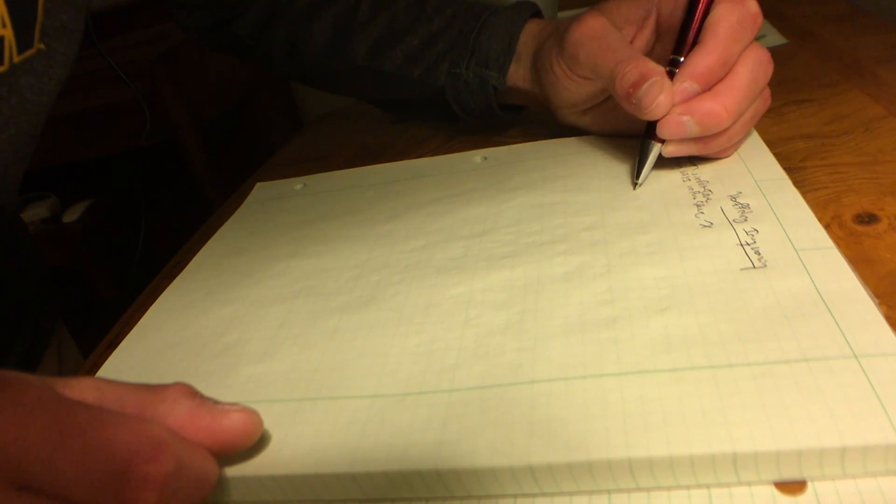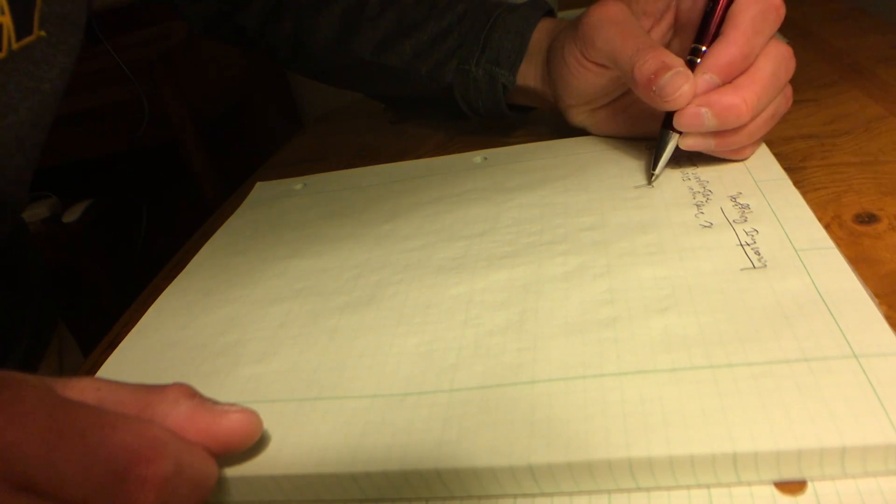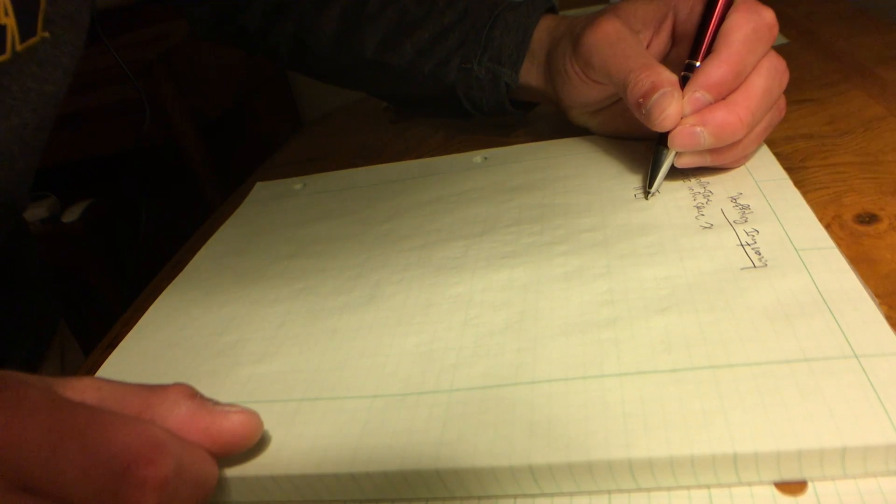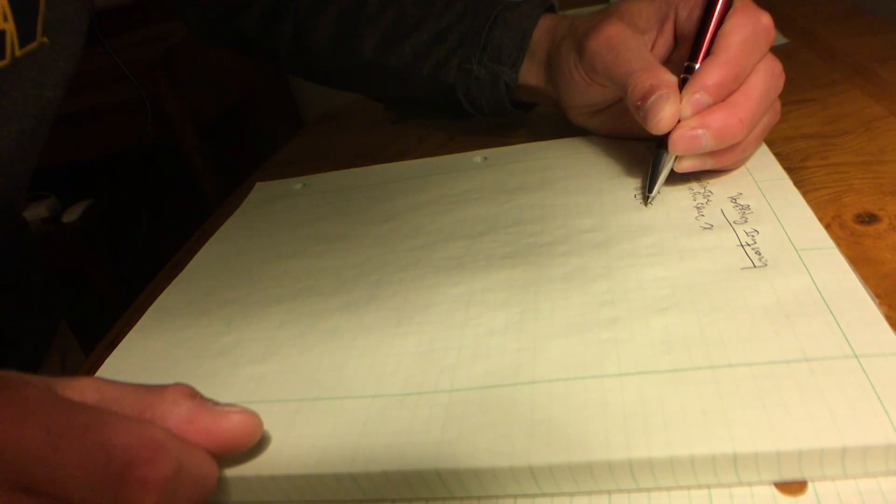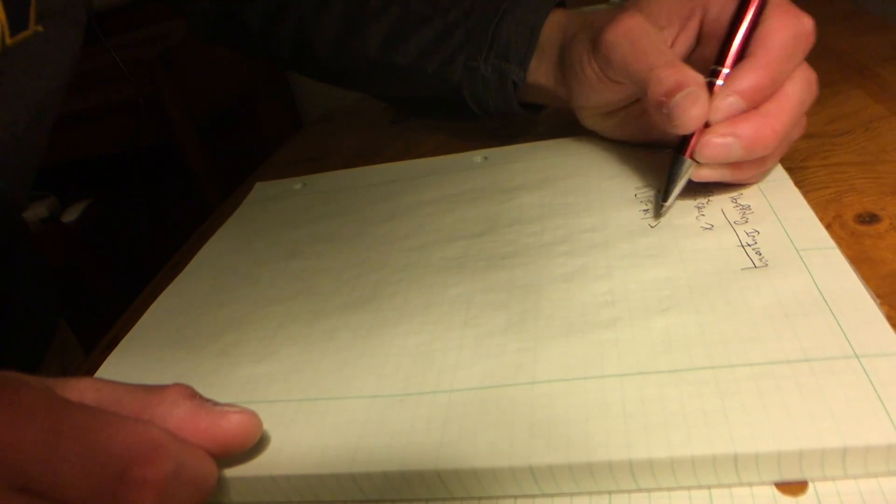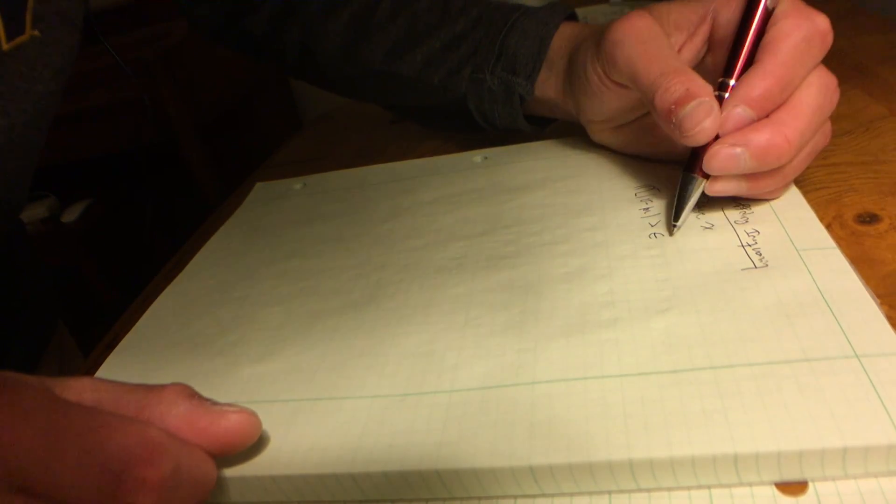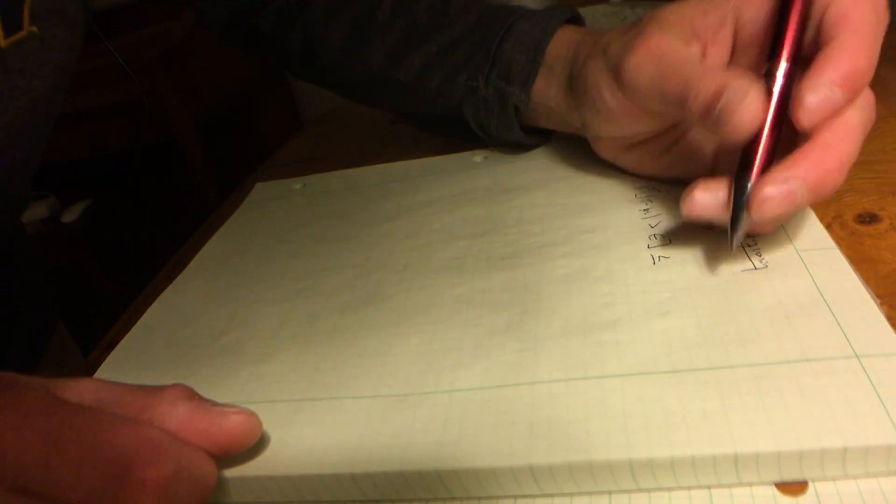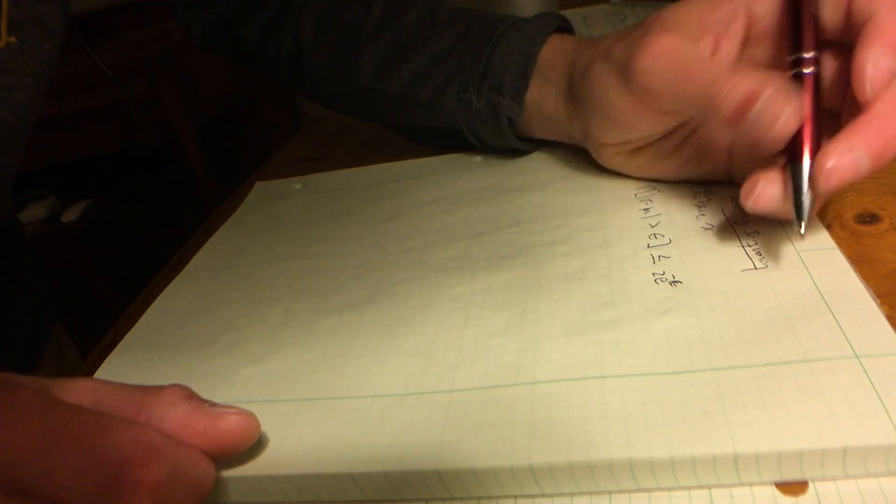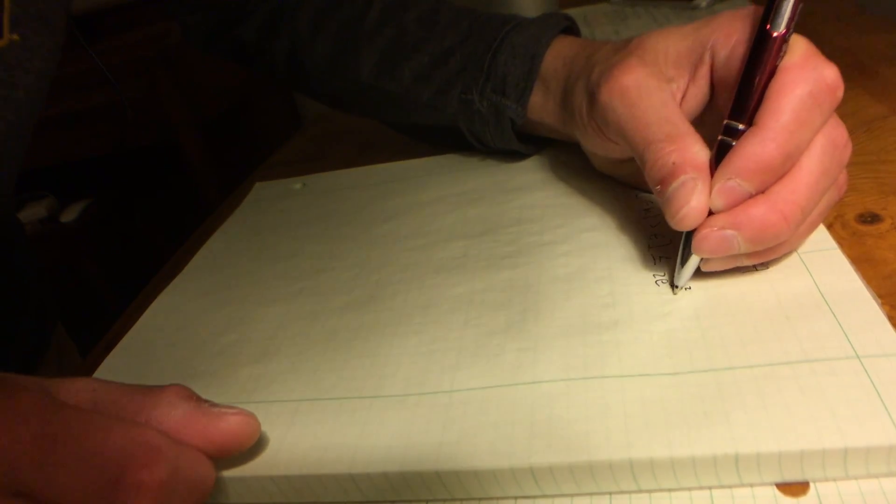So we could write down the formula, the inequality, as the absolute value of mu minus nu is greater than epsilon, less than or equal to 2e to the minus epsilon squared N.